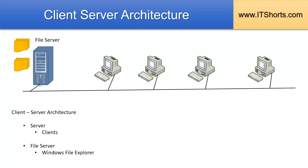For example, if we make a server just a file server, then there needs to be a piece of code running on the server computer which enables the sharing of files from it. Then another piece of code needs to be installed on all the client computers which can consume those shared files. In a Windows environment, that piece of code is the inbuilt Windows File Explorer, in both the Windows Server operating system as well as the client operating system.